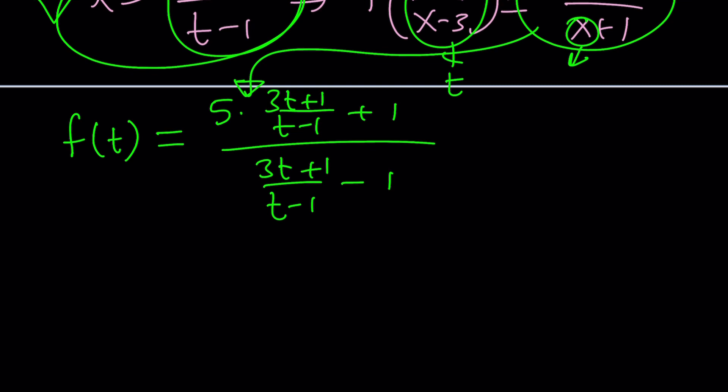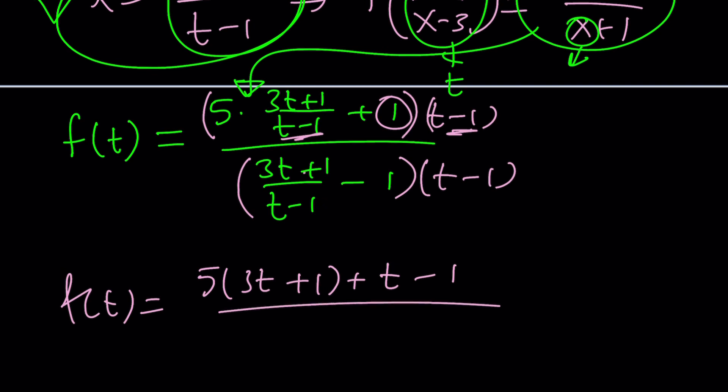5 times x, which is (3t+1)/(t-1) plus 1 divided by x, which is (3t+1)/(t-1) minus 1. You got that? I replaced the x values with this. So now I got an expression for f of t, which is nice because our input is so simple that we can easily convert to anything else. Now, one thing that will make this problem easier is multiply the top and the bottom by t minus 1. That will eliminate the fractions. When you multiply this by that, they're going to cancel out. You're going to end up with f of t equals 5 times (3t+1) plus t minus 1.